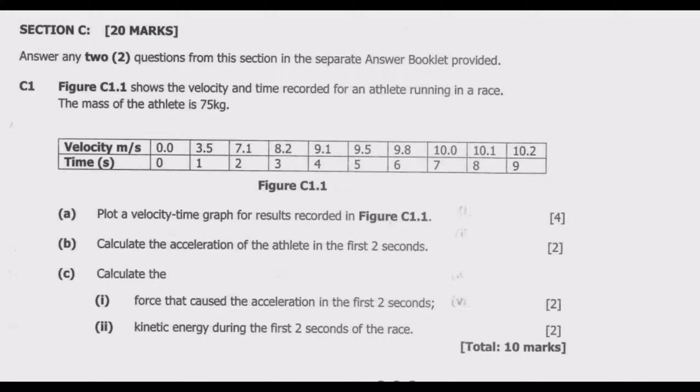We've been given the information in the table. The first question is asking us to plot a velocity time graph for the results recorded, so we need to ensure that the graph is well scaled. How do we do that? You need to look at the minimum, which is zero, then the maximum is 10.2. Since the maximum is 10.2, we can increase the interval by either one or an interval of two. So we have from zero here then you have two, then you have four, all the way up to 12.